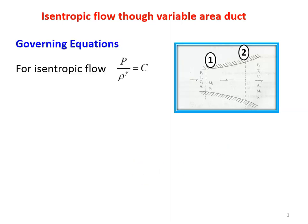The governing equation for Isentropic Flow: we have P by Rho to the power Gamma equal to constant. Isentropic flow is the flow which is reversible adiabatic. For reversible flow, there is no frictional losses, and for adiabatic flow, there is no heat transfer. That is why the duct is insulated — the outer surface of the control volume is insulated — so the flow becomes adiabatic and we assume there is no frictional losses. Therefore the flow becomes isentropic flow. For isentropic flow, from thermodynamics, PV to the power Gamma equals constant, which we represent in terms of density as P by Rho to the power Gamma equal to constant.